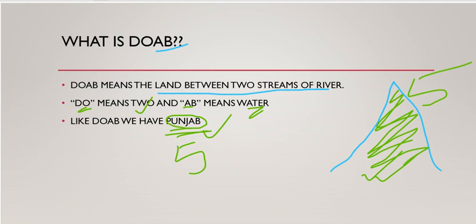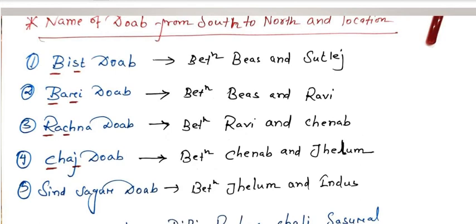Now let's discuss the five most important doabs which are often asked in exams. These doabs are arranged from south to north direction, because it is important to memorize them direction-wise. In exams, the examiner may ask you to arrange doabs from north to south or south to north direction, so it is recommended that you memorize them in sequential order.